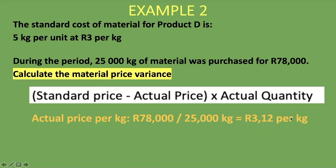That gives us 3 rand 12 cents per kg. You can see that the question can be asked in a variety of ways, but you just need to know the formula and how to get the amounts to plug in. If you are given the total amount paid, simply divide it by the total material purchased to get the price per kg.